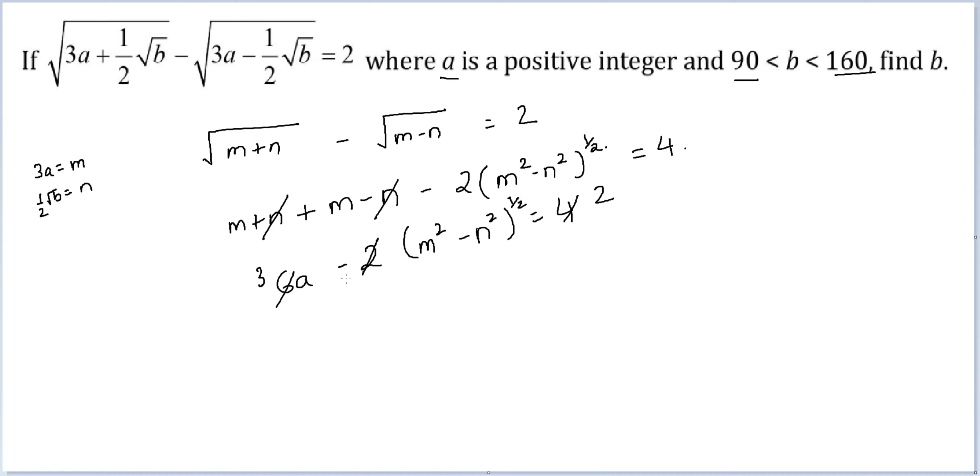Let me take this to the other side. I will get 3a - 2 = √(m² - n²). Again squaring both sides here I will get 9a² + 4 - 12a = m² - n².